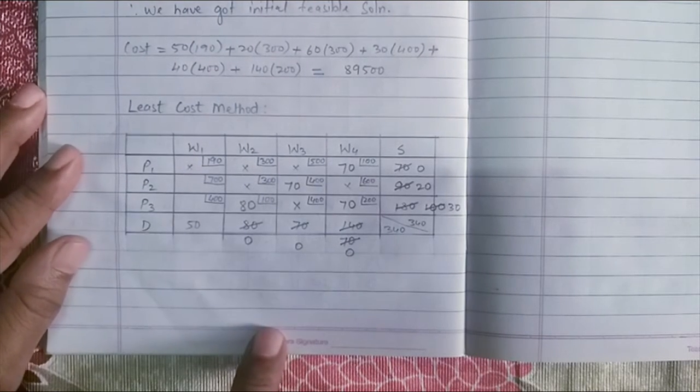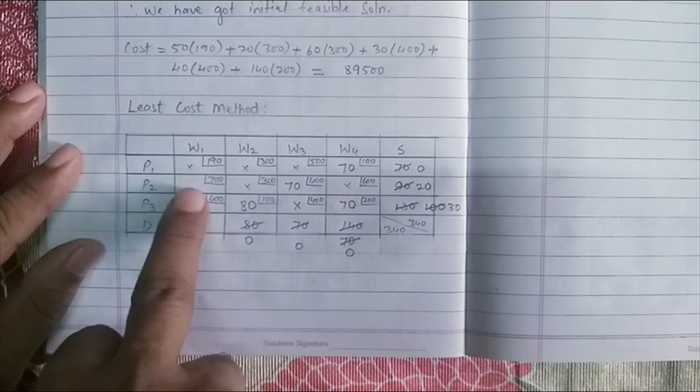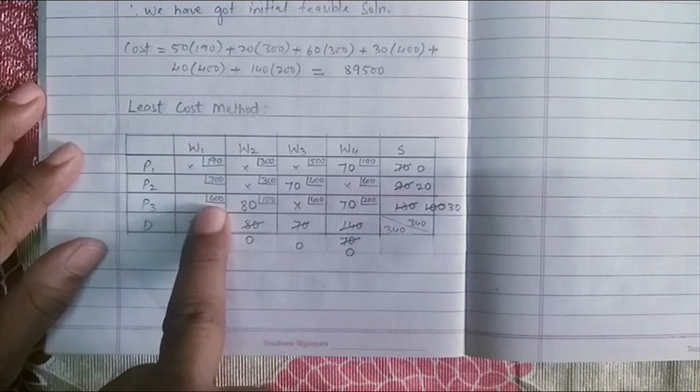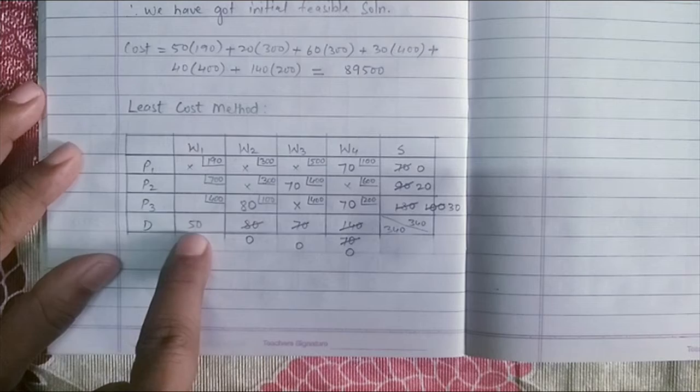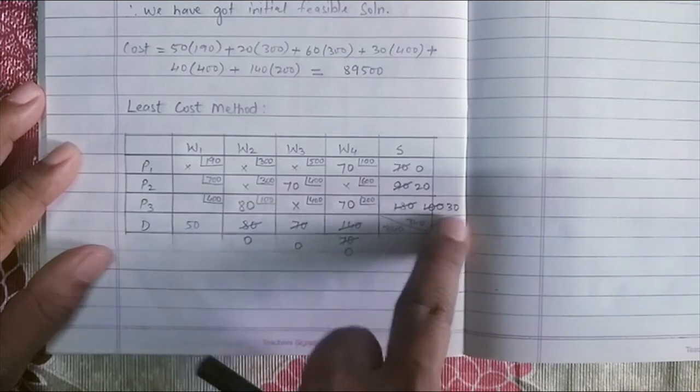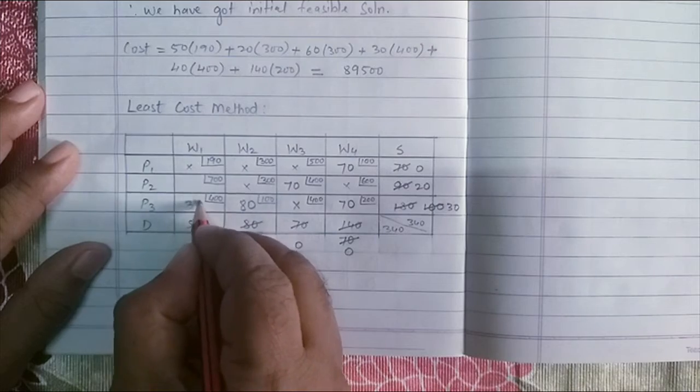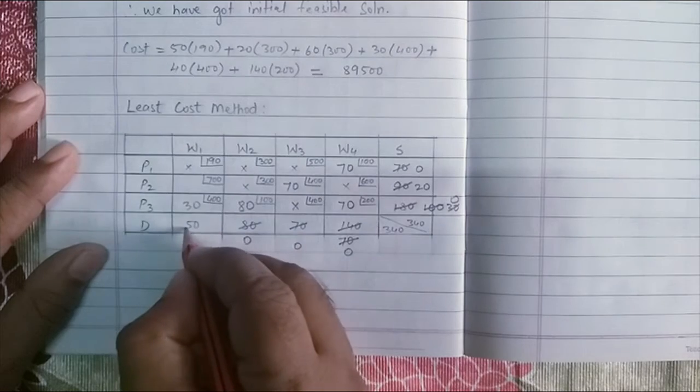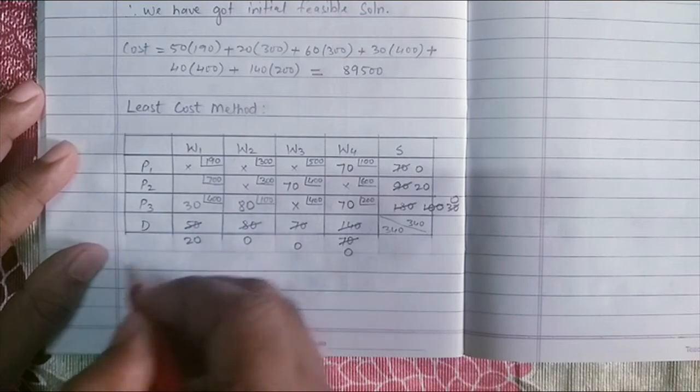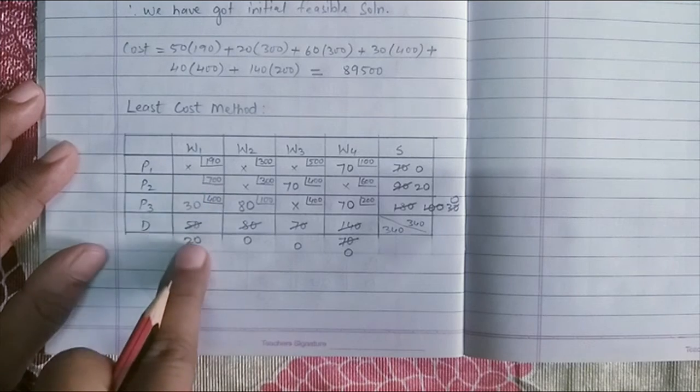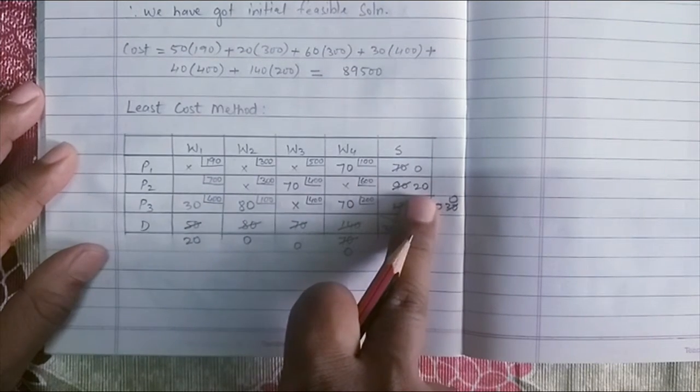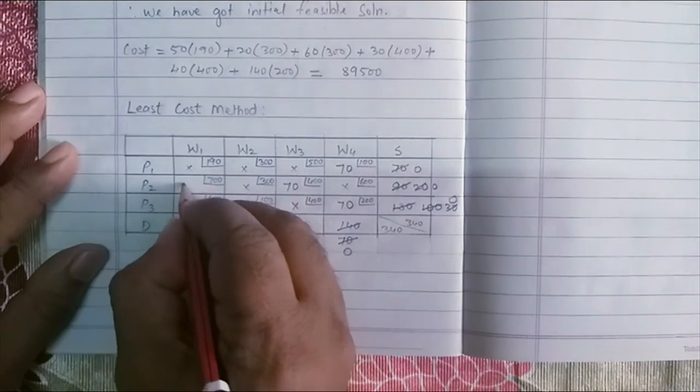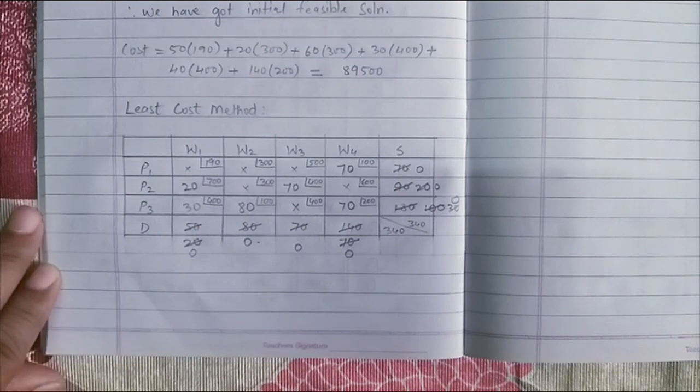The next two cells which are remaining is P2, W1 and P3, W1. Least cost is 400. Let's do the assignment here. We have 50 demand and 30 in supply. So 30 is least. So 30 comes here. Now, this becomes 0 minus 30 from this demand. I get 20 and now there's only one cell which is remaining. 20 is the demand and supplies are all to 20. So I'll assign 20 here and complete all my allocations.